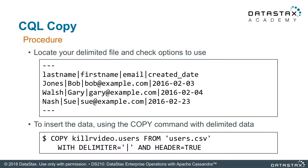To run CQL Copy, the first thing you do is look at your file: what's the delimiter, what options do you need? In this case, it's a pipe delimiter, so you need to specify that the delimiter is a pipe symbol. The file also has a header — last name, first name, email, created date — as the first row. You specify the pipe delimiter and header in your configuration, run copy FROM, and all that data will go directly into the user table.